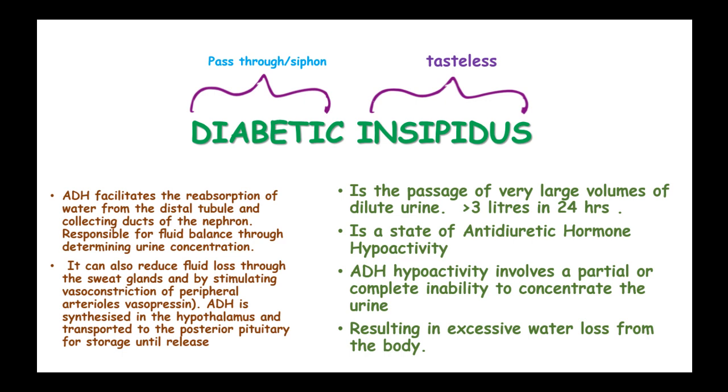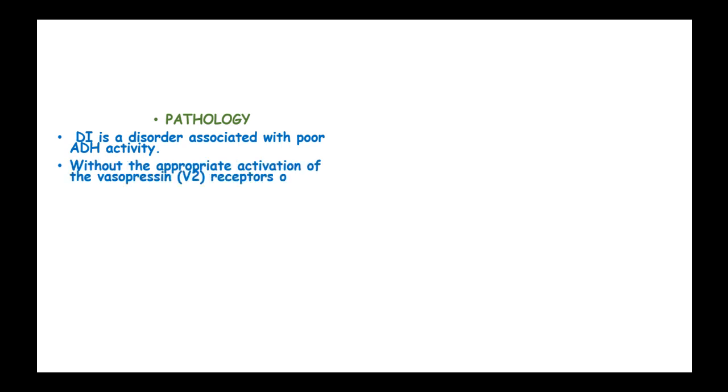ADH is synthesized in the hypothalamus and transported to the posterior pituitary gland where it is stored until release. Diabetes insipidus is a disorder that is associated with poor ADH activity.